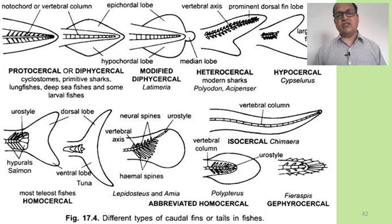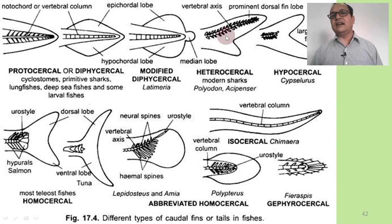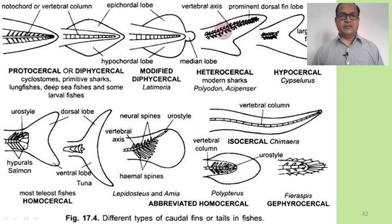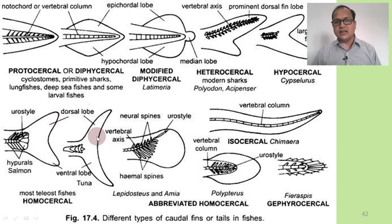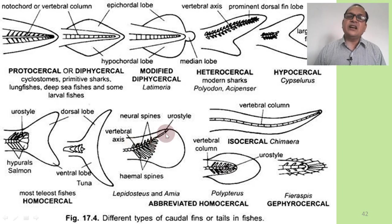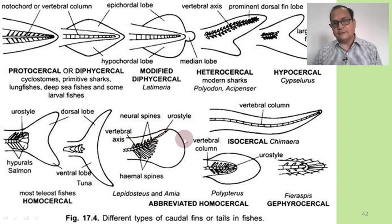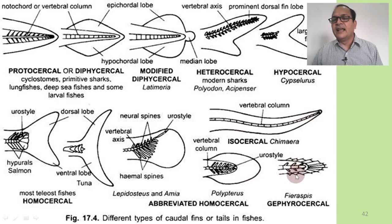These are the structures of different caudal fins. These are the protocercal tail, diphycercal tail, and modified diphycercal tail. This is the heterocercal tail in which the epicaudal lobe is longer than the hypocaudal lobe and the vertebral column diverts towards the epicaudal lobe, making it asymmetrical both internally and externally. The homocercal tail is symmetrical externally; these are externally symmetrical homocercal tails but internally asymmetrical in Lepidosteus and Amia. This is the protocercal tail in which the vertebral column goes up to the tip of the caudal fin. These are the gephyrocercal tails in certain fishes in which spines are supported by the lobes or fleshy flap.